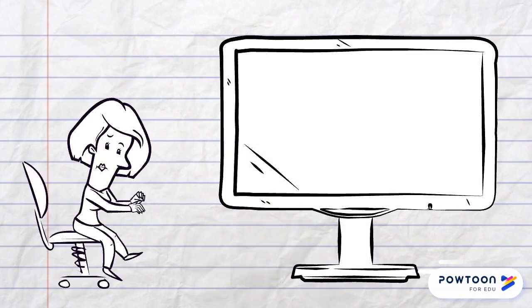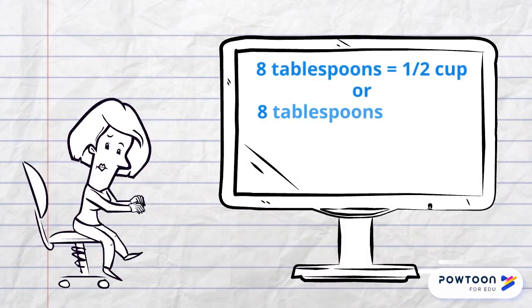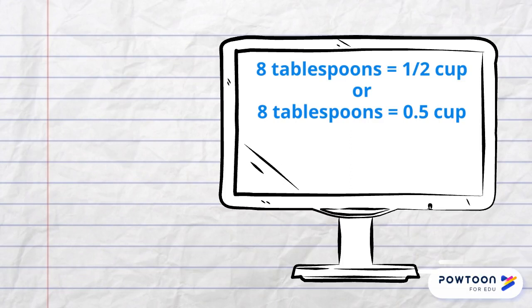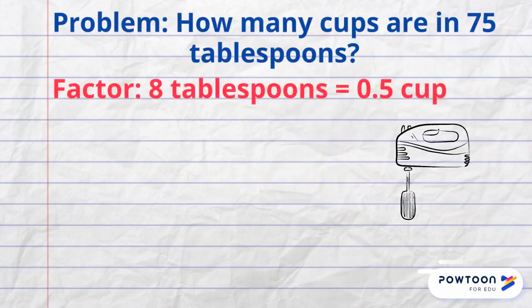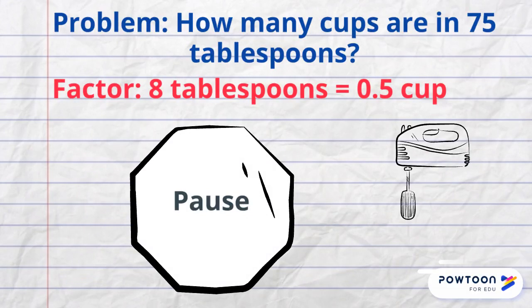Another kitchen conversion is eight tablespoons equals one half cup. We can represent one half as 0.5. This is the same number in decimal form and will make our math easier. The question is, how many cups are in 75 tablespoons? Pause the video and try this unit conversion.